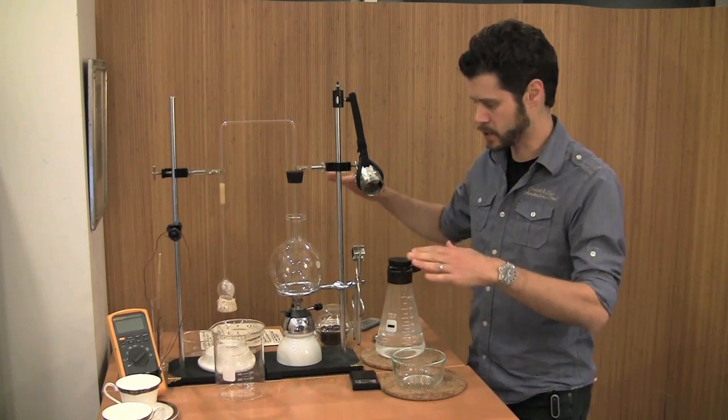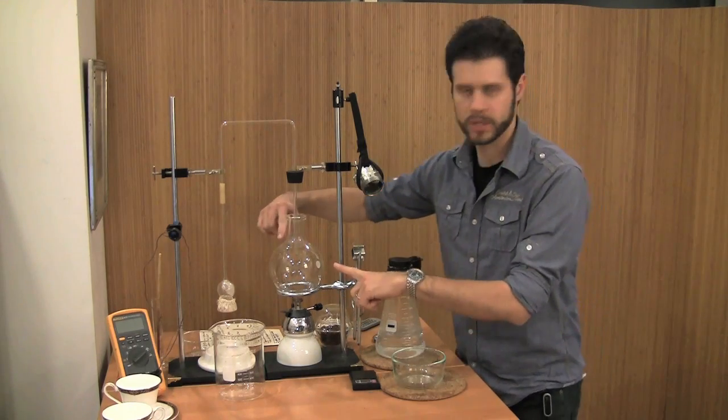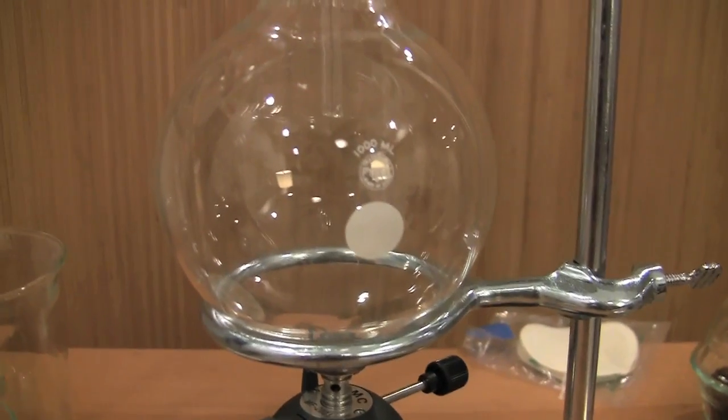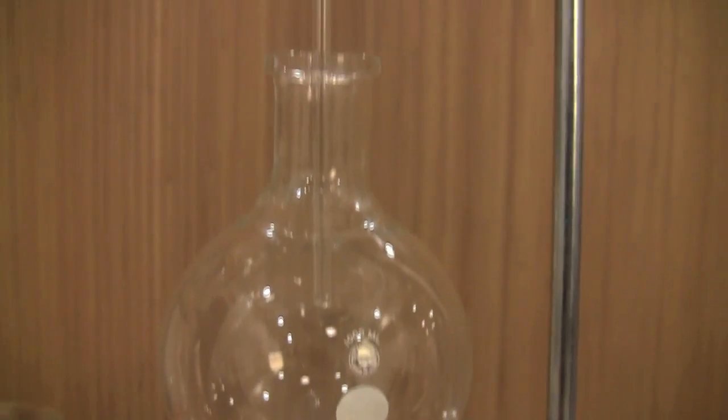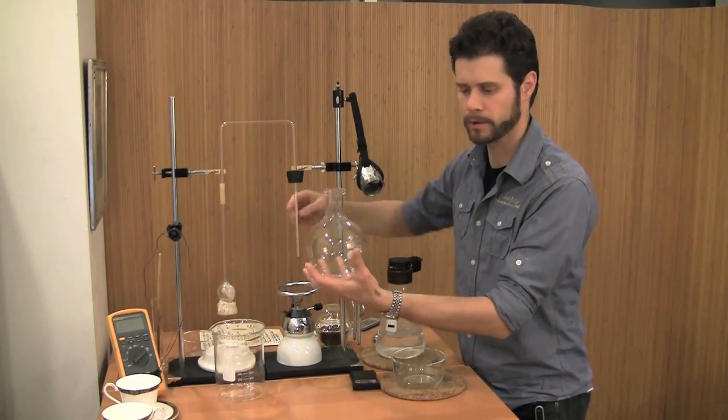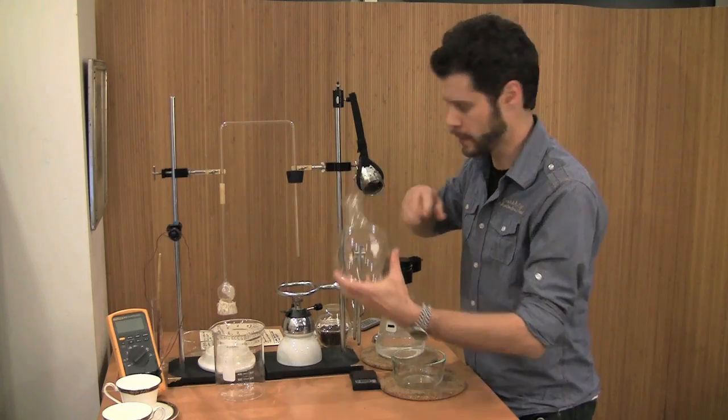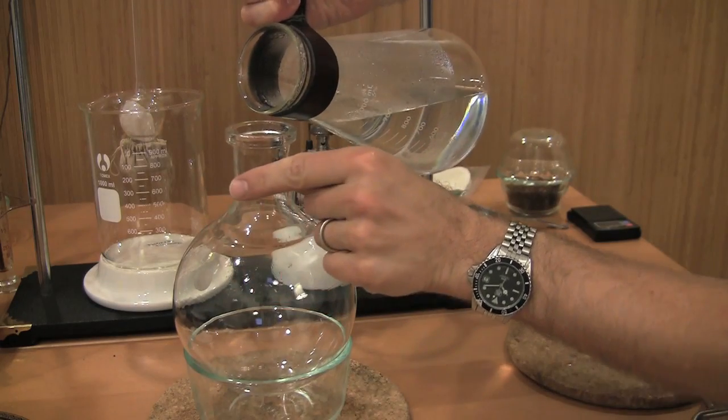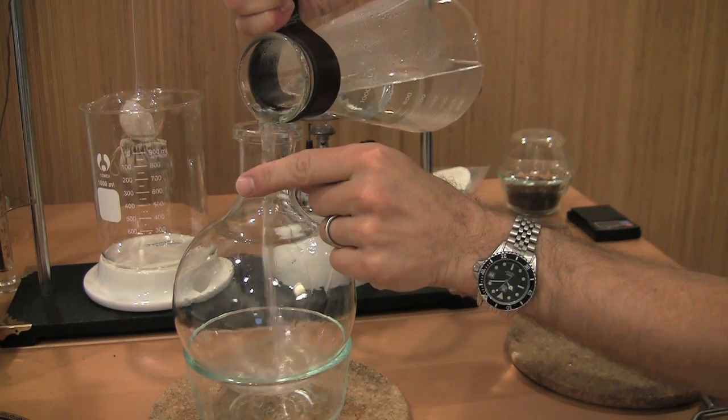So here's how this device works. I have what's called the boiling flask. This is a Florence flask that I'm going to pour 500 milliliters of water into. Now I've got some preheated water. This makes it a little faster as a demonstration on camera.